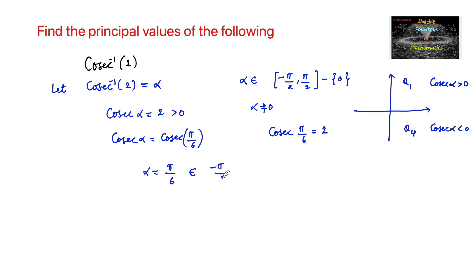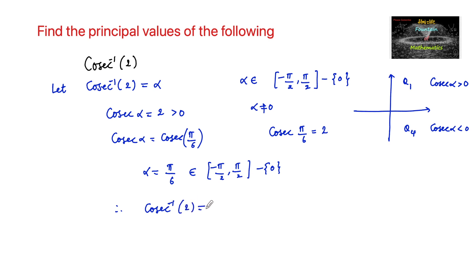Since pi by 6 belongs to the principal range of minus pi by 2 to plus pi by 2, excluding 0, we can write that cosecant inverse of 2 is equal to pi by 6. This is the principal value of cosecant inverse of 2.